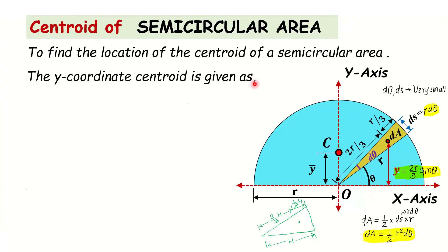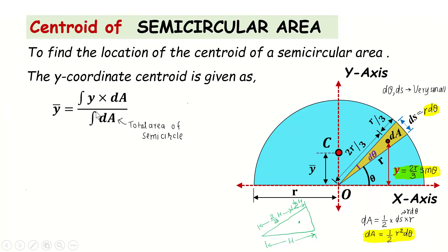The y-coordinate of the centroid is given as y-bar = ∫y·dA / ∫dA. The integration of dA over the entire figure is the total area of the semicircle. If you integrate the small sector areas throughout — from one end to the other completely — you get the total area of the semicircle, which is πr²/2, since the total area of a circle is πr².